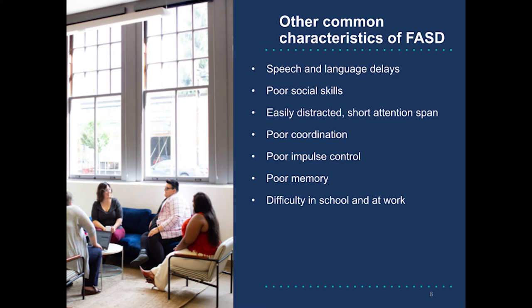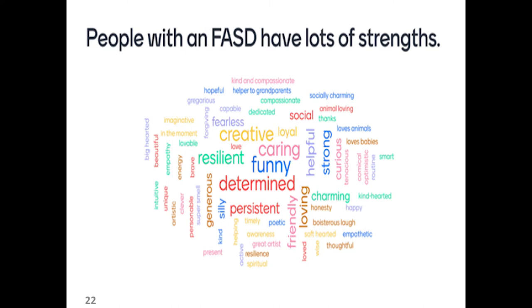Some other characteristics that are common among people with FASD are speech and language delays, poor social skills, short attention span, poor coordination, impulse control, and poor memory. These can lead to things like low self-esteem, difficulty in school, and potentially involvement with the criminal justice system. When working with individuals who have a FASD, it's important to find what is working and focus on those strengths to help an individual succeed.